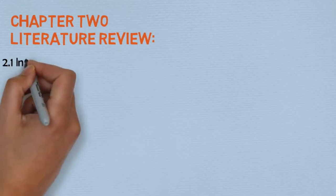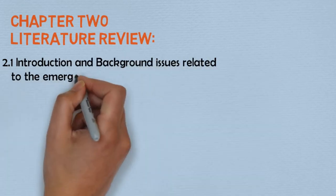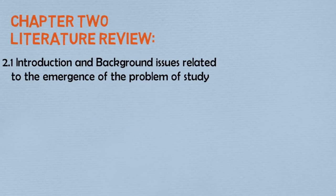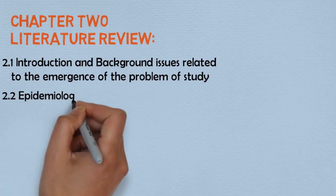In chapter two we have the literature review. The literature review needs to be organized to adequately articulate the important themes of the problem phenomenon. Under the literature review we have the introduction and background issues related to the emergence of the problem. Use the narrative of the background and problem statement to begin this review, summarized in not more than 200 words. The literature review should also include an epidemiological review.